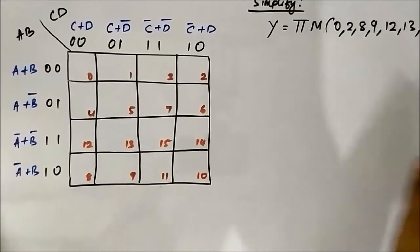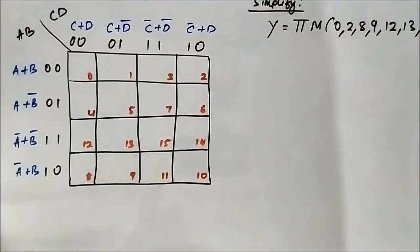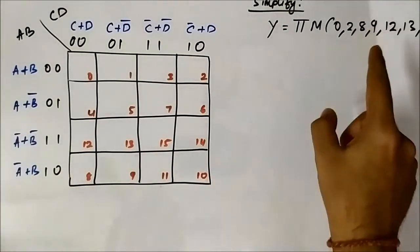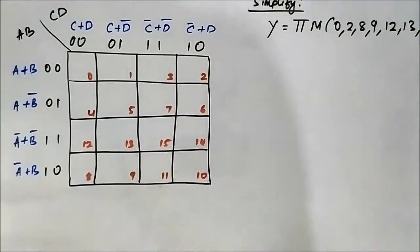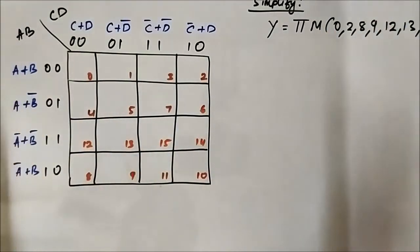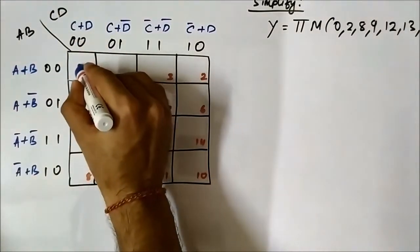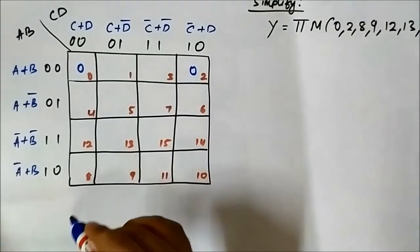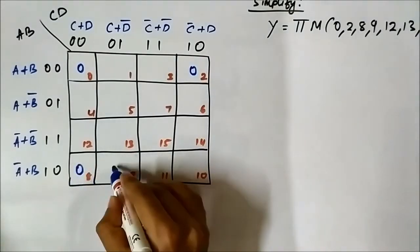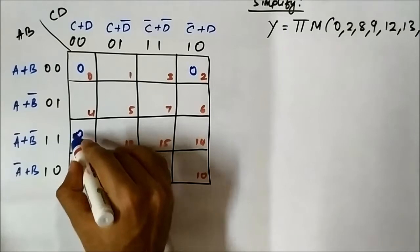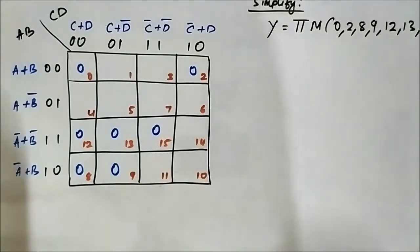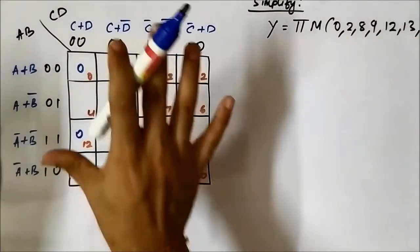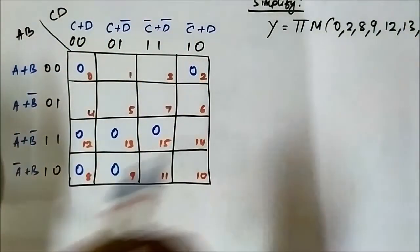We have the format of the 4-variable POS kmap ready. Now we will mark the respective cells as 0 for the max terms: 0, 2, 8, 9, 12, 13, and 15. These are the cells which correspond to those max terms and we have marked them as 0 because it is a POS kmap.